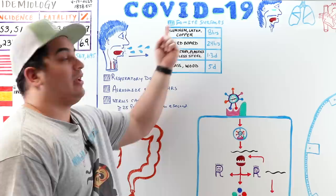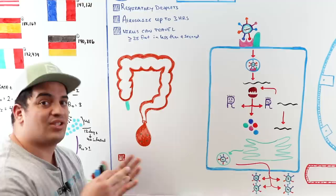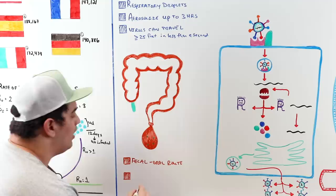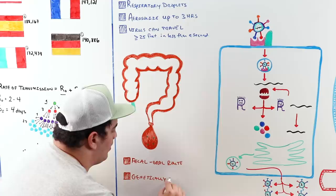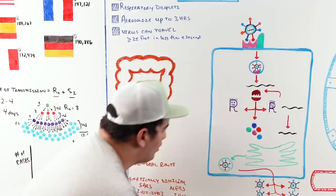Transmission can occur not only through direct respiratory droplets but also indirectly via fomite surfaces. Because SARS-CoV-2 is genetically similar to MERS and SARS, there is also potential for fecal-oral transmission, as those viruses were shed in stool.